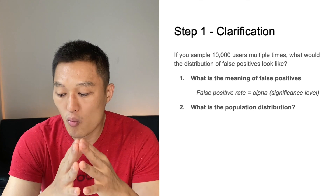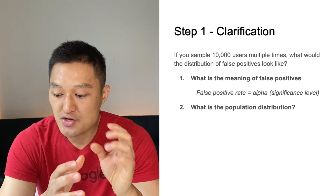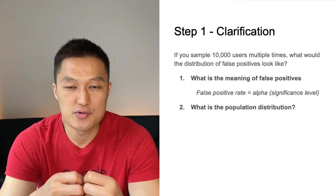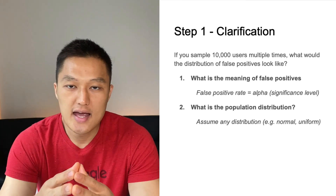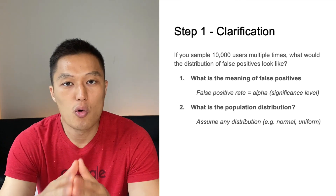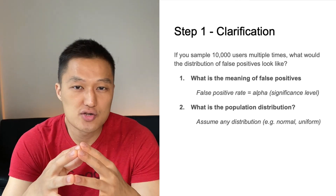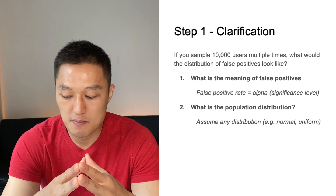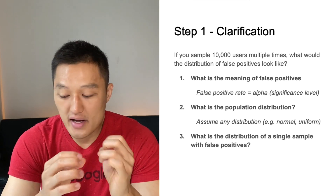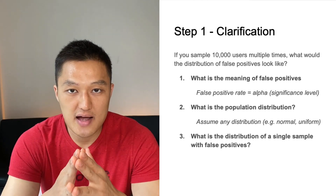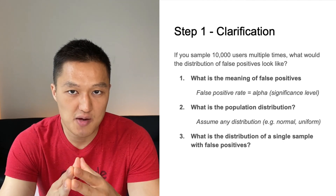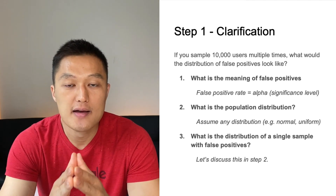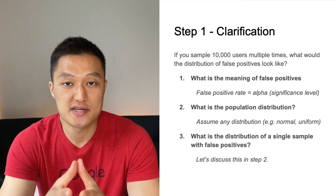The next question is: what is the population distribution? The question doesn't specify — it just says sample 10,000 users. Is it uniform, exponential, normal, or something else? You may want to ask this as a clarifying question. Then, determine what the distribution of a single sample of false positives looks like — this is a stepping stone toward understanding what multiple samples look like.